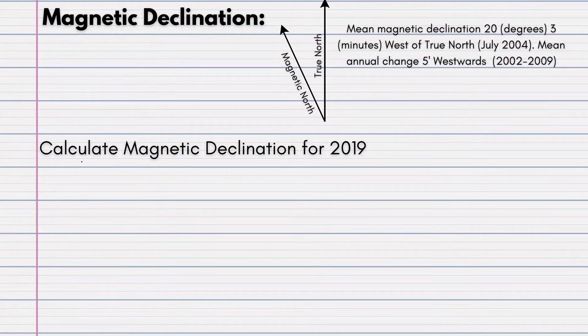This question says, calculate the magnetic declination for 2019. This will be our year. The first thing to do, your step 1, would be to calculate the difference in years. Now, in our information given, you can see it says 2004. We will write down number 1. The difference in years would be 2019, subtract 2004. That will give us 15 years.